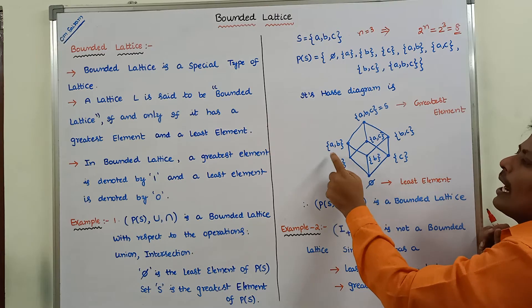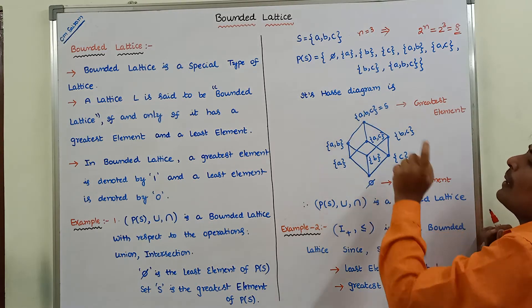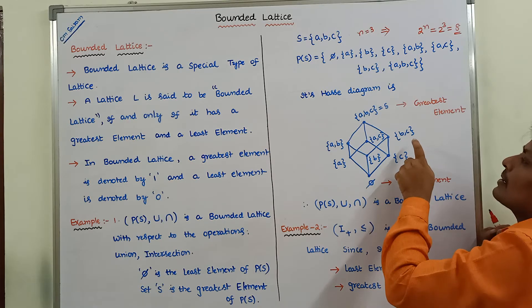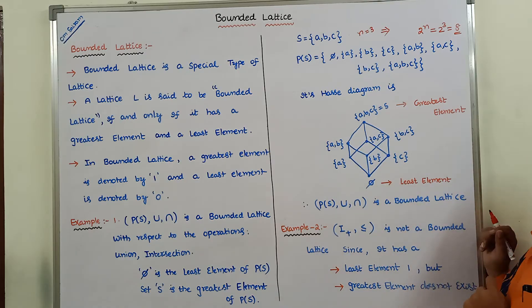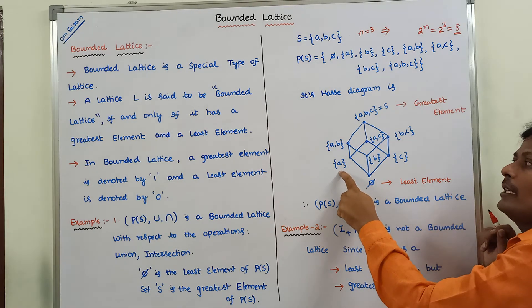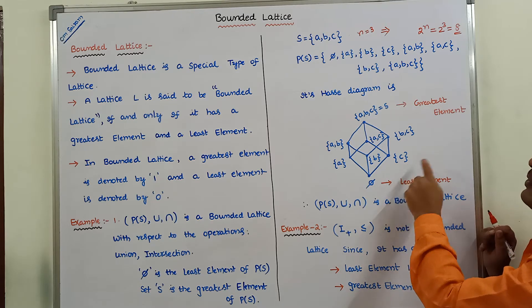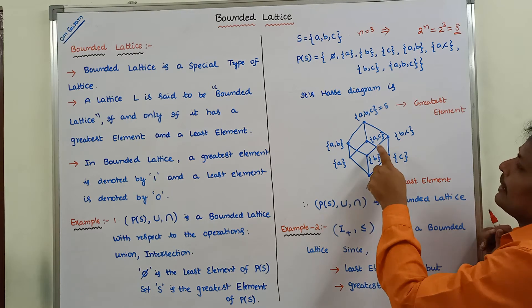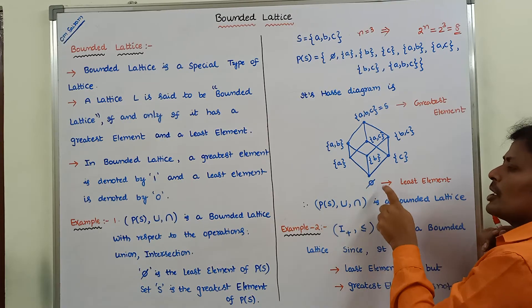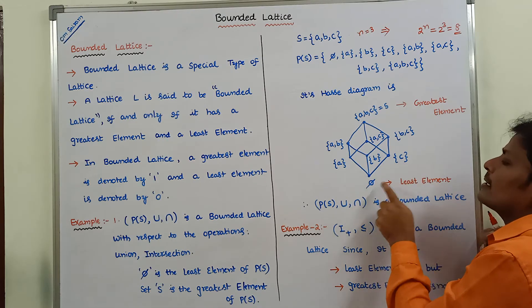Now for intersection operations: {a,b,c} intersect {a,b} = {a,b}; {a,b,c} intersect {a,c} = {a,c}; {a,b,c} intersect {b,c} = {b,c}; {a,b} intersect {a,c} = {a}; {a,c} intersect {b,c} = {c}. Also, {a} intersect {b} = pi, {b} intersect {c} = pi, {a} intersect {c} = pi. When going from bottom to top, union operation is performed; when going from top to bottom, intersection operation is performed.